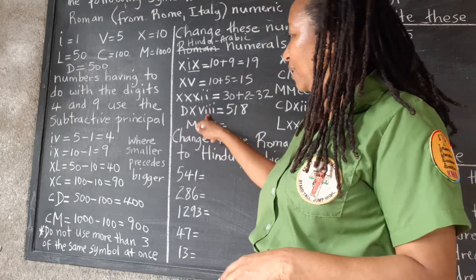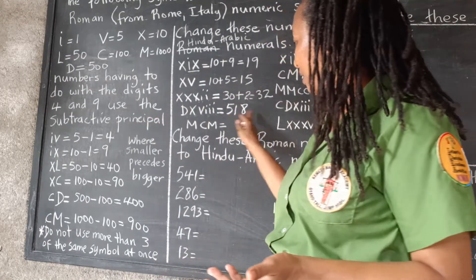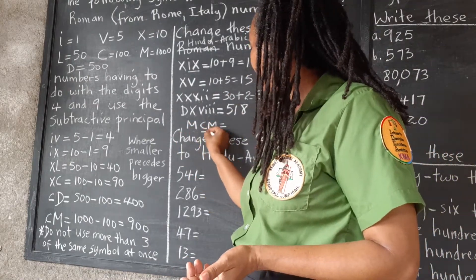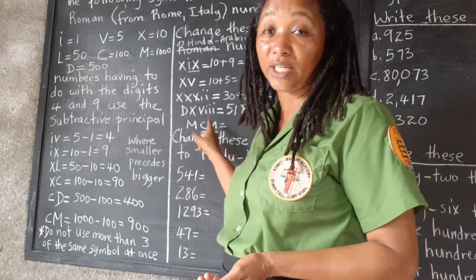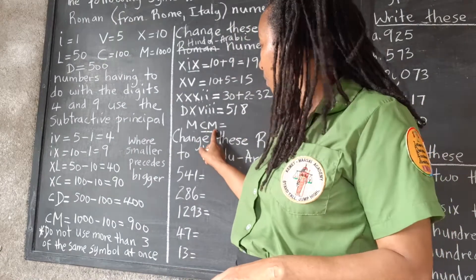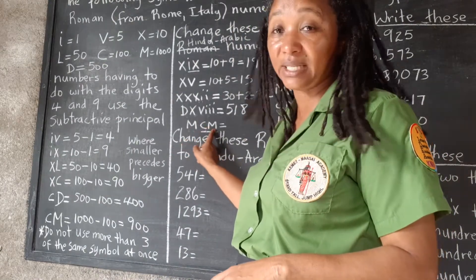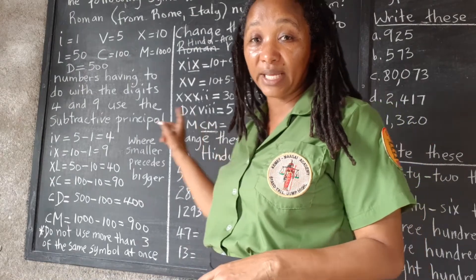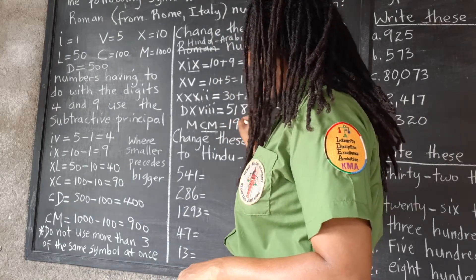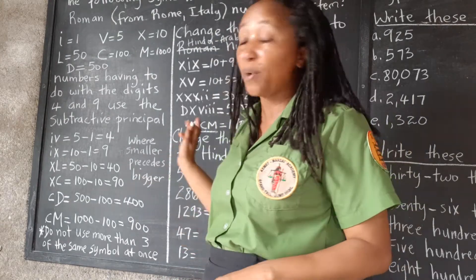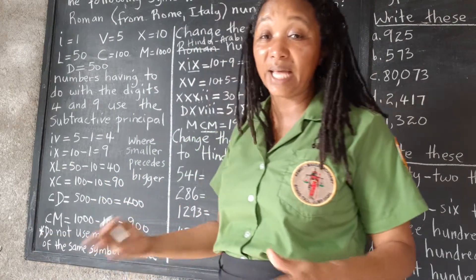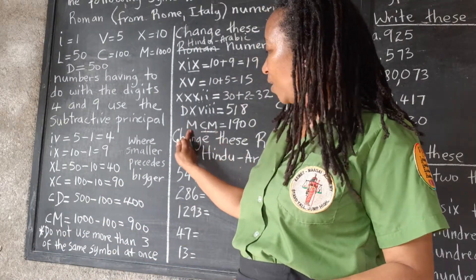500 plus 10 plus 8 is 580. Here we have a 1000, but we have the 100 coming before the 1000 — so that tells us we subtract for this part. We have a 1000, and 1000 take away 100 is 900. So this is actually 1,900. If you know already that CM is 900, you could have just gone straight to 1900.